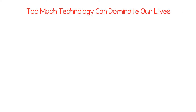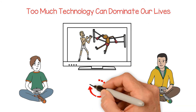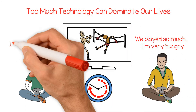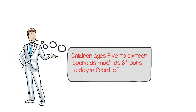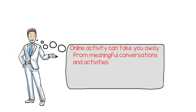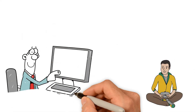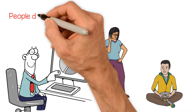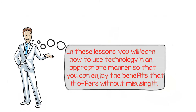Too much technology can dominate our lives. Using technology can be fun and enjoyable, but if we aren't careful, technology use can start dominating our lives. One study suggests that children ages 5 to 16 spend as much as 6 hours a day in front of a screen — this is one-fourth of a day. Online activity can take you away from meaningful conversations and activities with friends and family, and also make us more sad and anxious. Students and adults can misuse and even abuse technology when they don't realize the impact of their online behaviors. In these lessons, you will learn how to use technology in an appropriate manner so that you can enjoy the benefits it offers without misusing it.